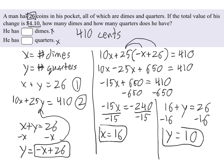So putting it all together, what do we have? We have 16 dimes and 10 quarters.